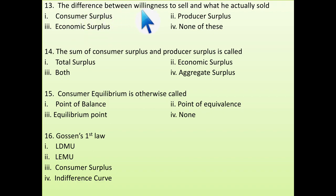Next, the difference between willingness to sell and what he actually sold. See, it is the matter of selling. That means this is producer surplus. Clear? Then, this sum of consumer surplus and producer surplus is called economic surplus.